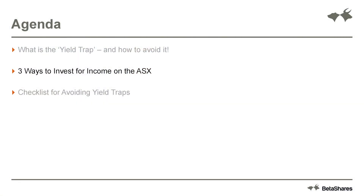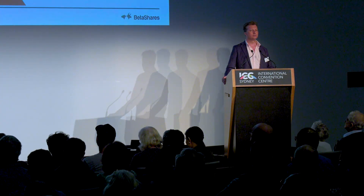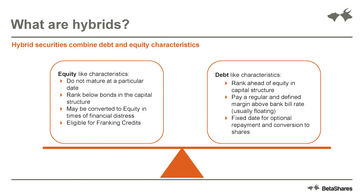We're going to look at three ways to invest for income on the ASX with a diversified portfolio. The first is fixed income and hybrid securities. A hybrid security, as its name suggests, is a security that has characteristics sitting somewhere between equities and bonds. The equity-like characteristics include: they don't have a particular maturity date; they rank below bonds in the capital structure, meaning in the event of a wind-up, hybrid securities would be wound up before bondholders experience losses; and hybrids may be converted into equity. We saw this with a Spanish bank earlier this year where hybrid securities were converted into equity and subsequently immediately wiped out to zero value.